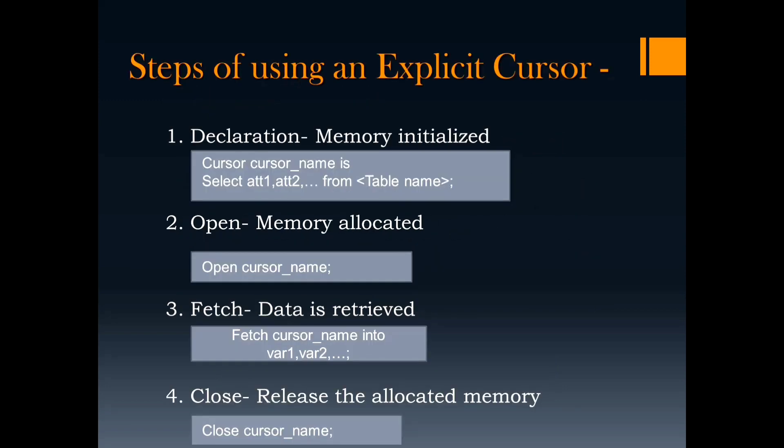There are four steps of using an explicit cursor. The first step is declaration. In this step, memory is initialized for the cursor. Declaration is done under the declaration section. Note that only the first step is done under the declaration section; the next three steps are done under the execution section.